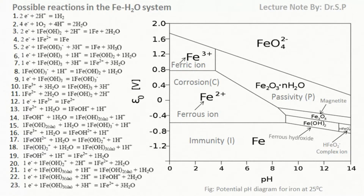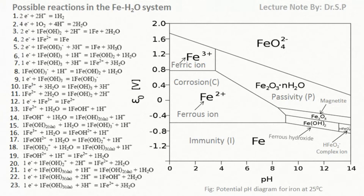In other regions of the potential-pH diagram, it can be seen that the corrosion of iron produces ferric ions (Fe³⁺), ferric hydroxide (Fe(OH)₃), ferrous hydroxide (Fe(OH)₂), and at very alkaline conditions, complex HFeO₂⁻ ions.